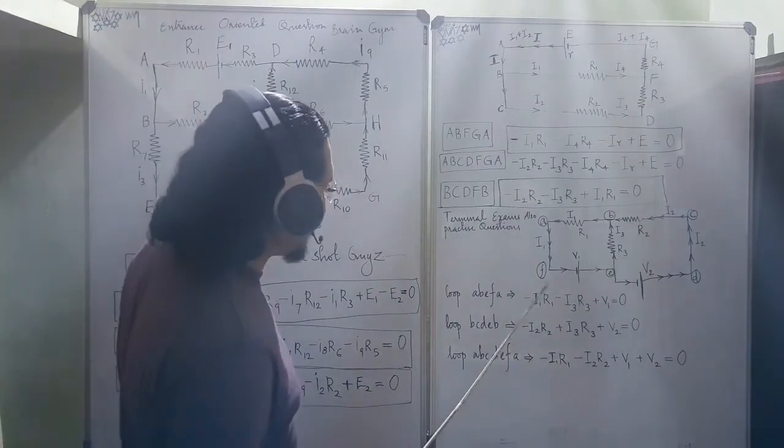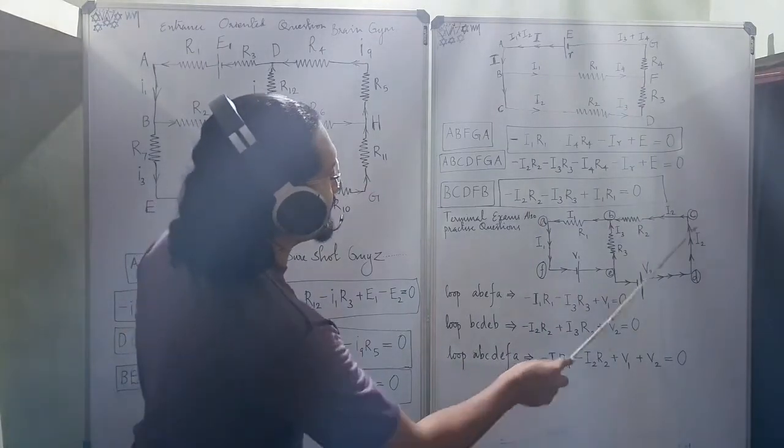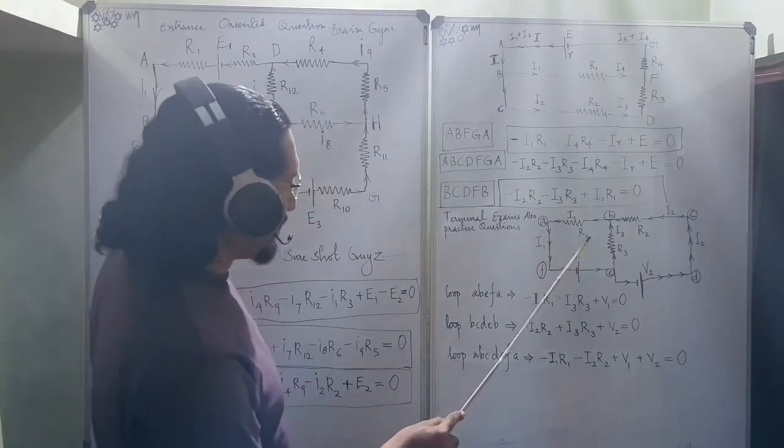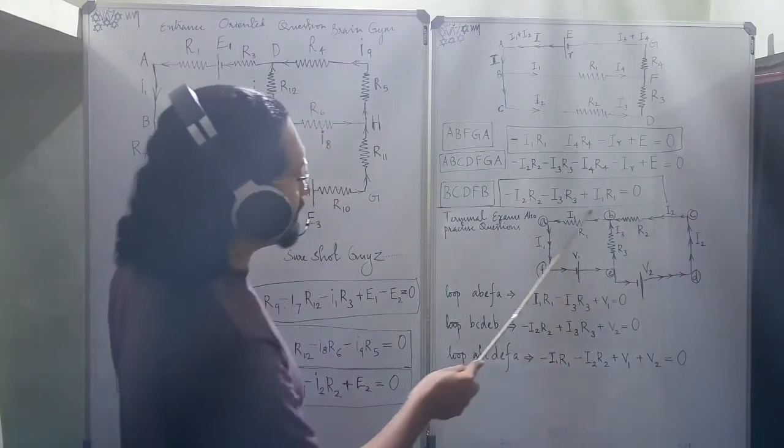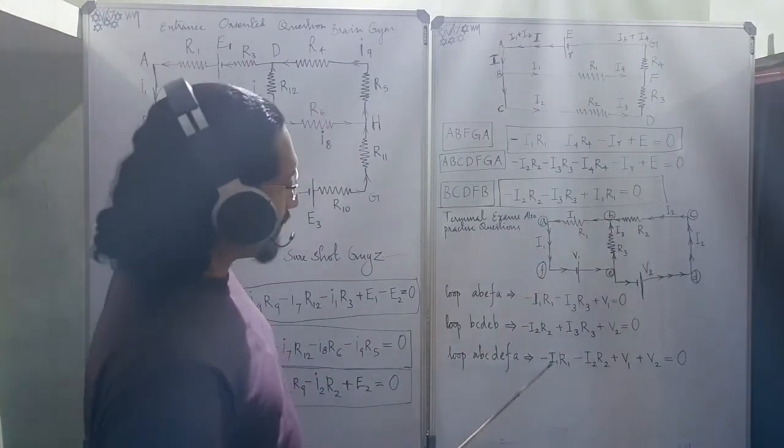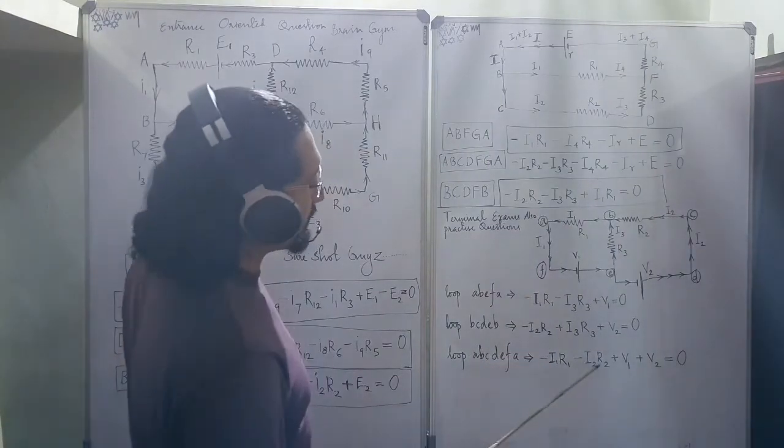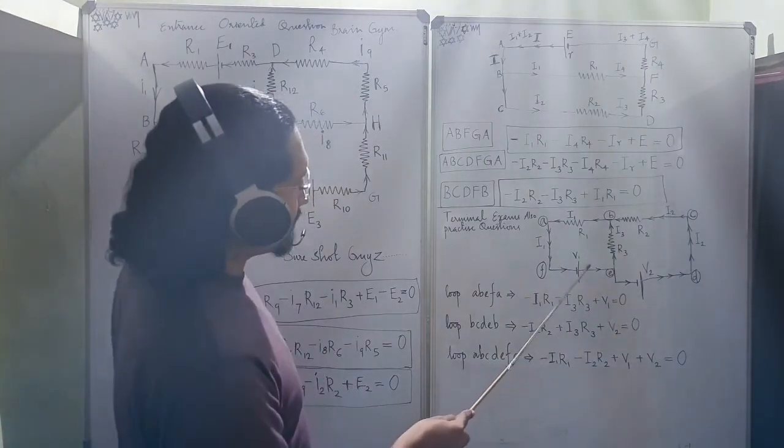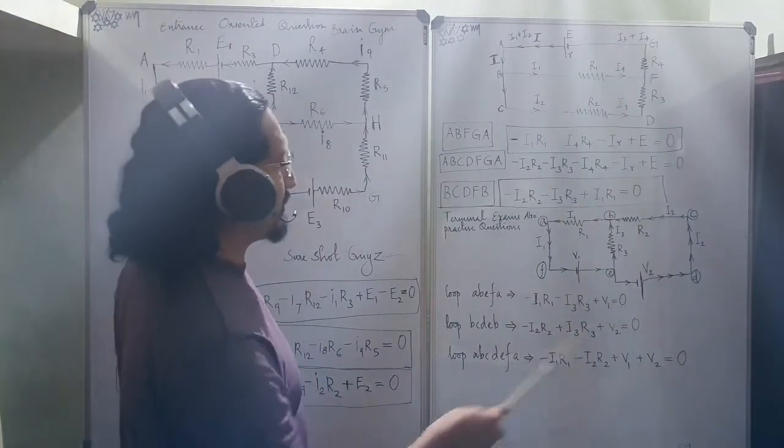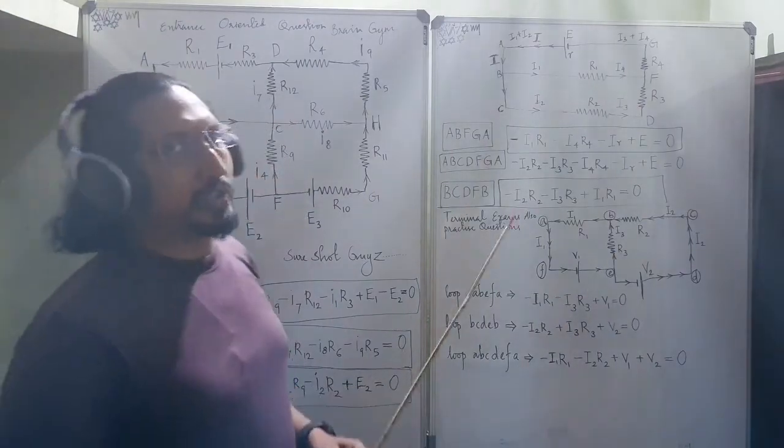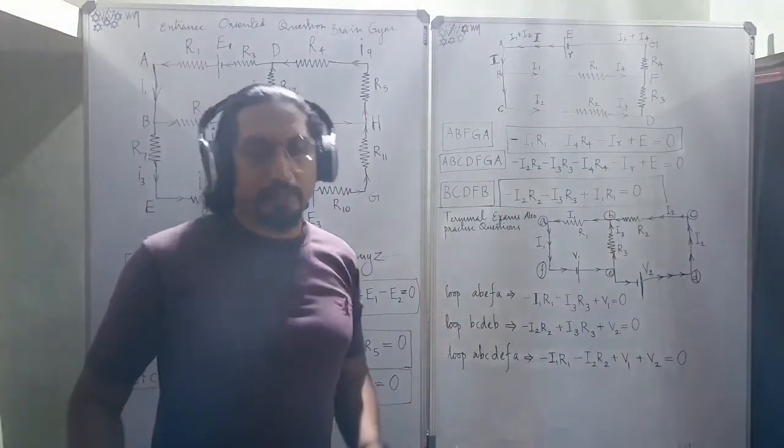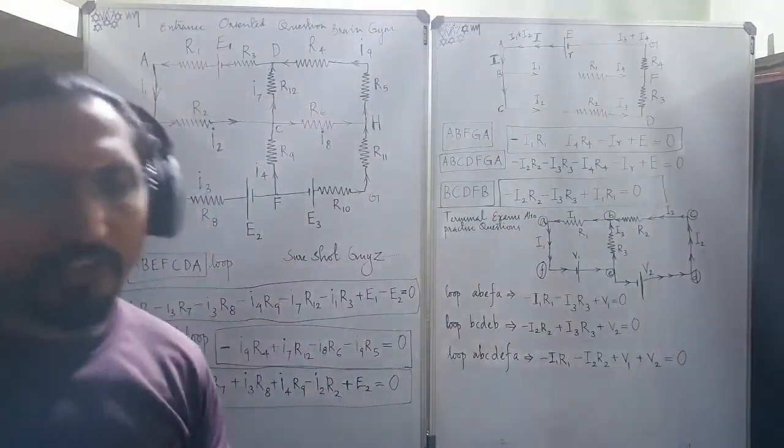Then comes the direction A-B-C-D-E-F-A. Again, see A-B section. A-B section is from the positive it emanates. So, A-B section is minus I1*R1. B-C section is minus I2*R2. Then comes nothing. So, minus I1*R1 minus I2*R2 plus V1 plus V2. It is over. So, if you have any doubts, I will be happy to hear from you. Please like, share, subscribe.